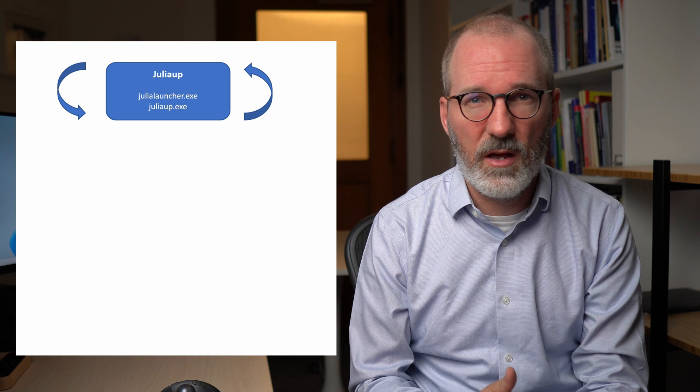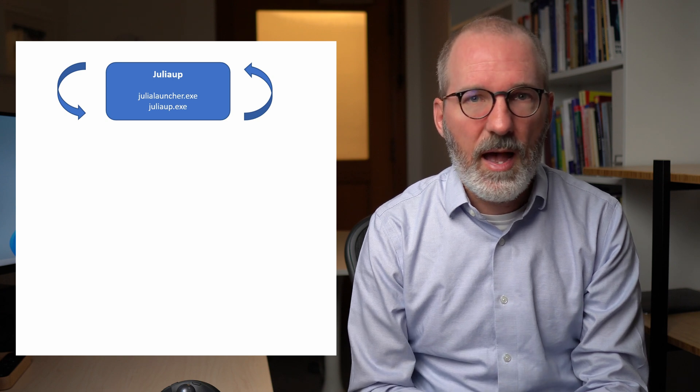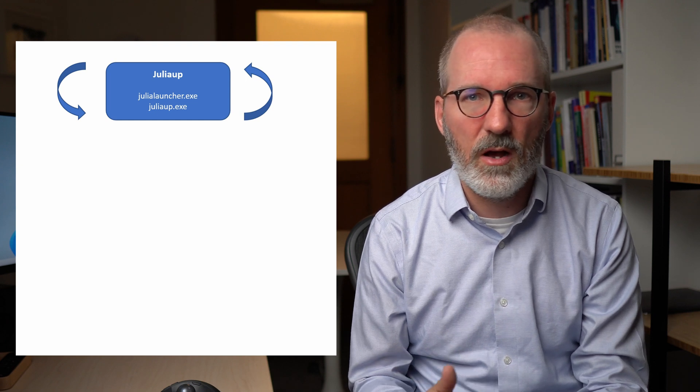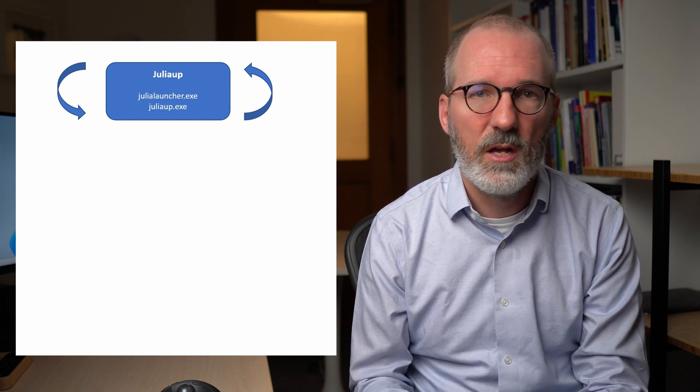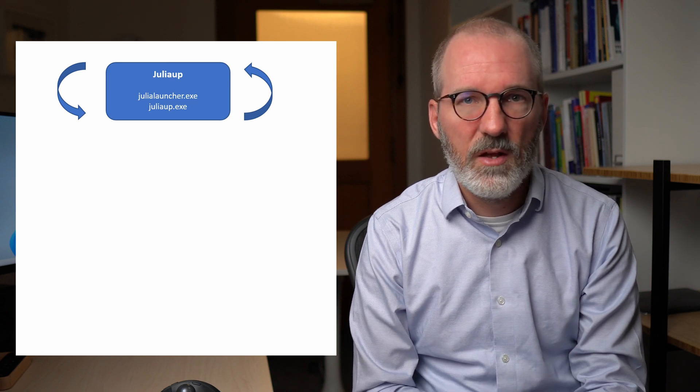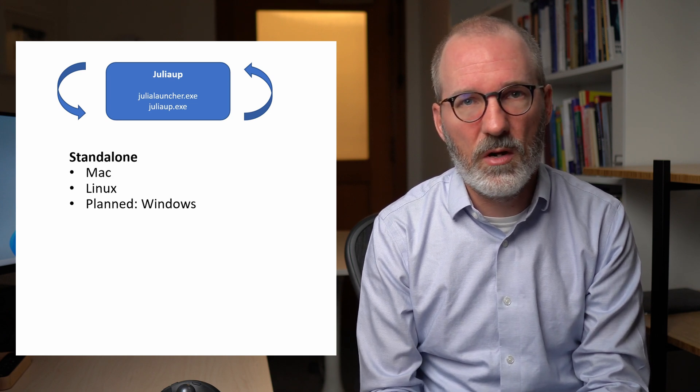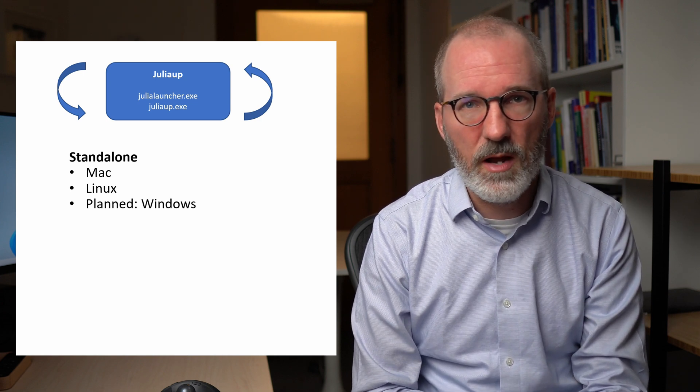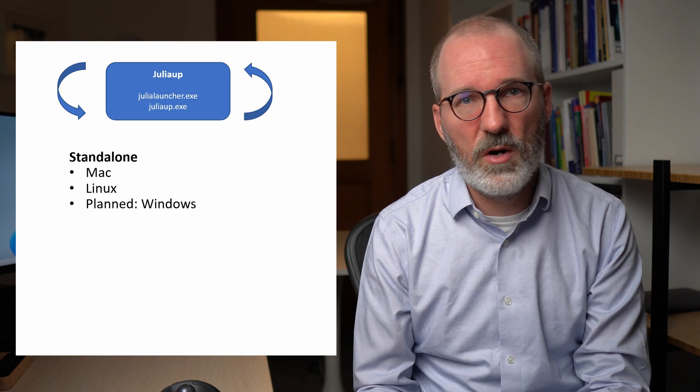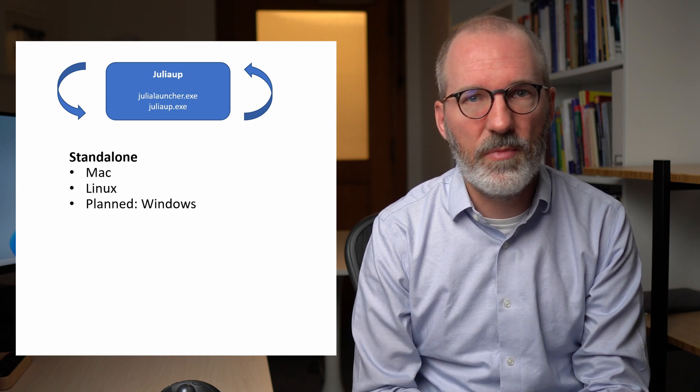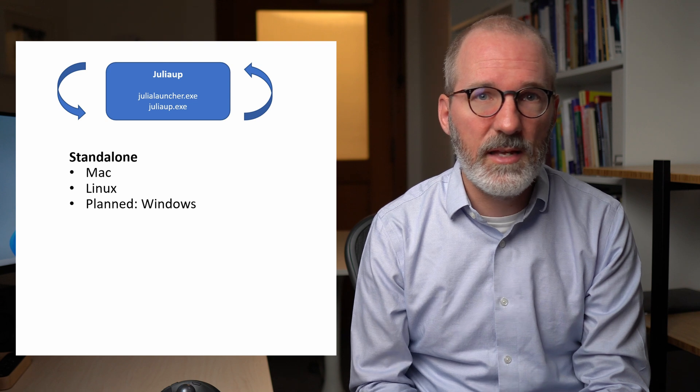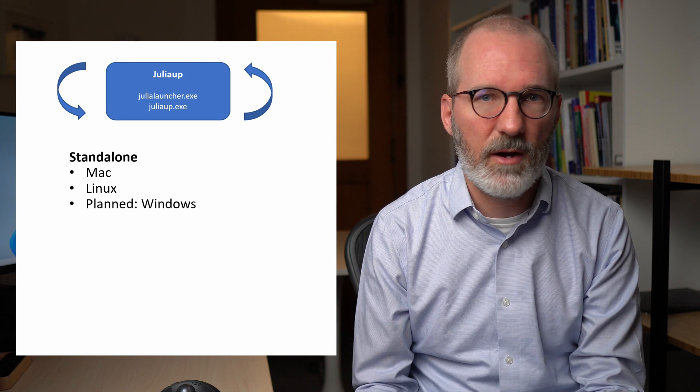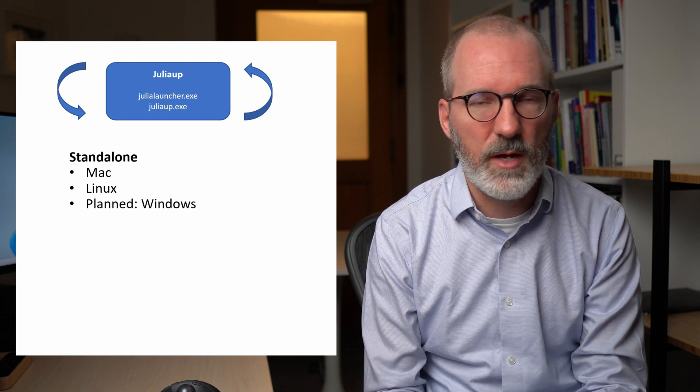And there are two ways in which you can install JuliaUp broadly and then it depends on which of those you choose how your JuliaUp itself is updated on your system. The first one is what we call standalone installations. And in that case everything is handled by code that we run. So the commands that I showed for Linux and Mac, those are standalone installations. And in that case there is code in JuliaUp that automatically checks for new versions of JuliaUp and then in the background continually updates JuliaUp itself.